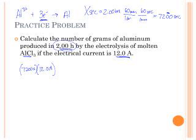So, current times seconds gives us Coulombs. We want to convert it to moles of electrons. So we know that there are 96,500 Coulombs in one mole of electrons. And how many moles of electrons does it take to reduce aluminum ion? Three. So there are three electrons for one mole of aluminum. And then one mole of aluminum. We need to look up on our periodic tables. What is the GFM of aluminum? I think it's like 26.98.